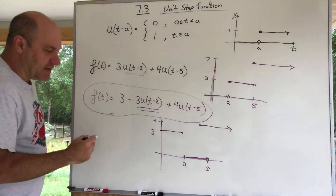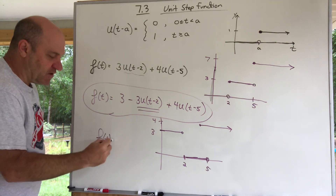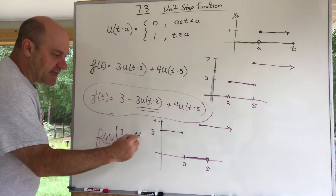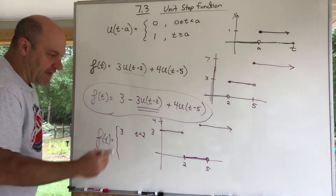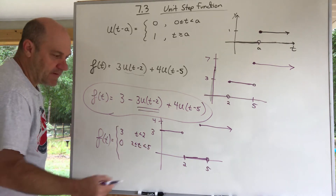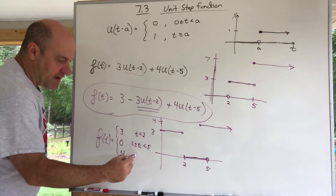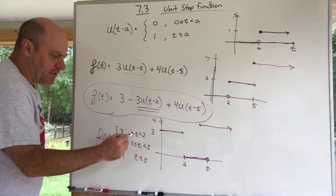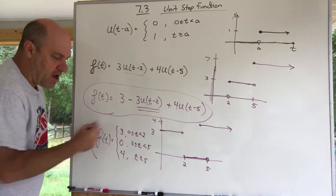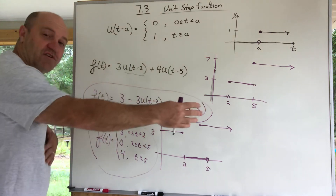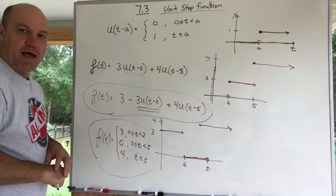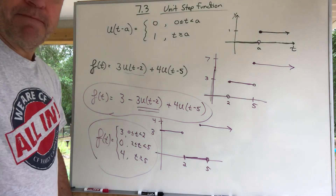For fun, let me write the second example as a piecewise function. When t is less than 2, it's a 3. When t is between 2 and 5, it's zero. When t is greater than or equal to 5, it's a 4. So: three, then zero, then four. Now we can write that same piecewise function in straight function notation using the unit step function. I have a lot more to say, so I'll pause here for a second.